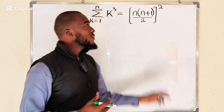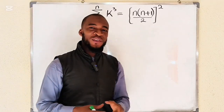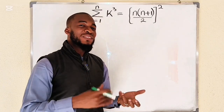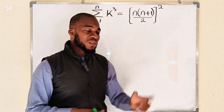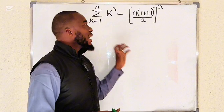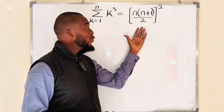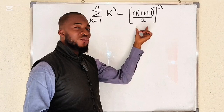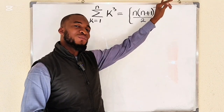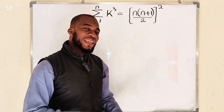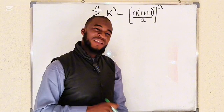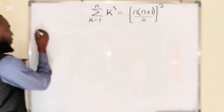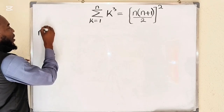Hello everyone. I would like to use this formula for my new year video, but in this tutorial we are going to show that the sum of cubic natural numbers from 1 down to n can be expressed using the formula n times (n plus 1) divided by 2, whole raised to the power of 2. Don't forget to like, comment and subscribe. Let's get started.